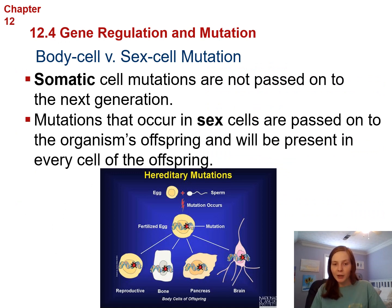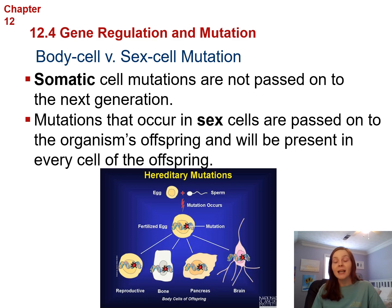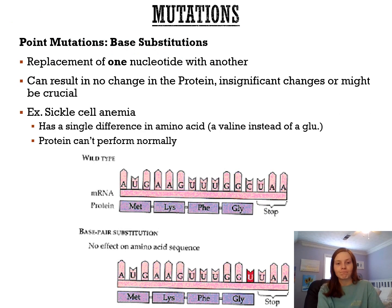Somatic cell mutations — mutations in body cells — are not passed on to offspring. For example, skin cancer from tanning beds is not going to be passed down to your kids. However, if you have a mutation in your gametes (sperm or egg), that will be passed on to offspring because the baby will inherit that mutated DNA. So gamete mutations can be passed on, somatic mutations cannot.